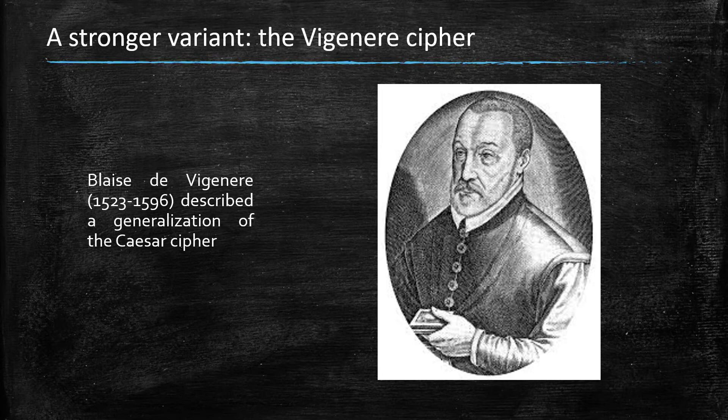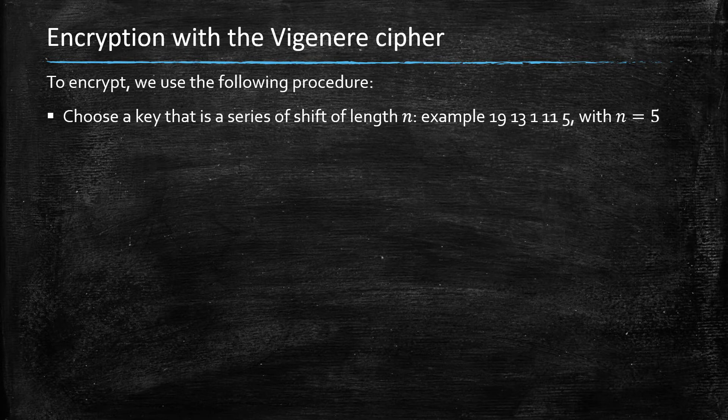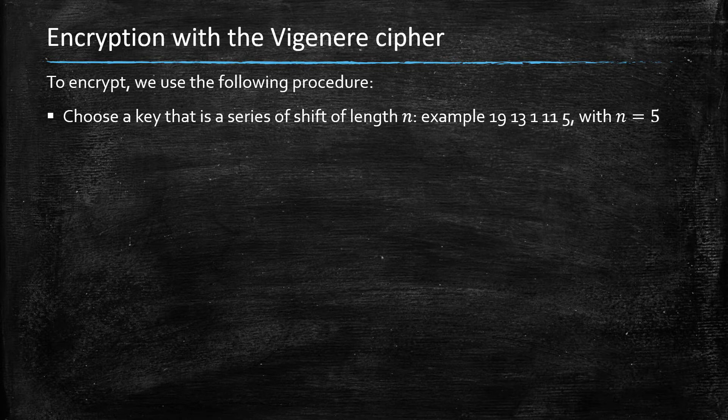It's 26, maybe 25 if you consider that the trivial shift consisting of not doing anything is not really something you want to do. But in any case, 25 or 26 is a very low number. But there is a way to sort of generalize the cipher to enlarge the key space.